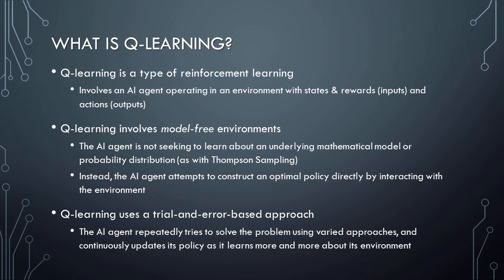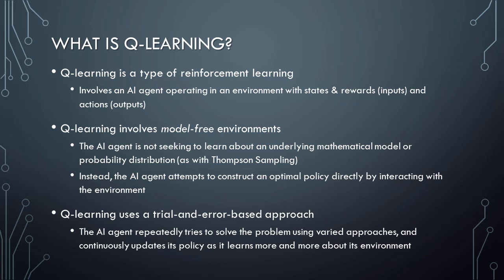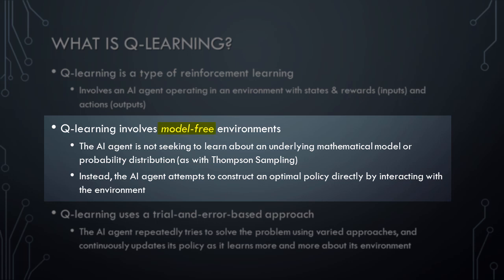To begin, let's talk briefly about what Q-Learning is. Q-Learning is a type of reinforcement learning. Just like other forms of reinforcement learning, Q-Learning based systems involve an AI agent operating in an environment with states and rewards — that is, inputs — and actions, that is output. Unlike some other forms of reinforcement learning, Q-Learning is focused on what are known as model-free environments. In a model-free environment, the AI agent is not seeking to learn about an underlying mathematical model or probability distribution, as was the case with Thompson sampling-based reinforcement learning. Instead, in Q-Learning, the AI agent attempts to construct an optimal policy directly by interacting with the environment.